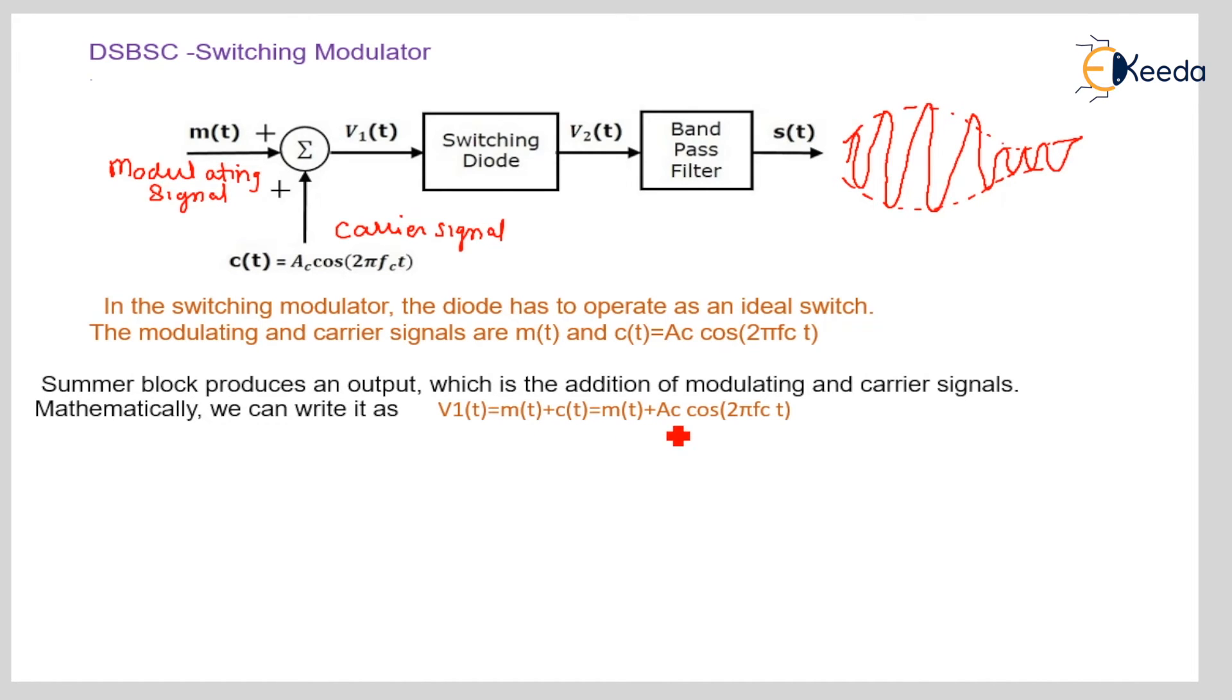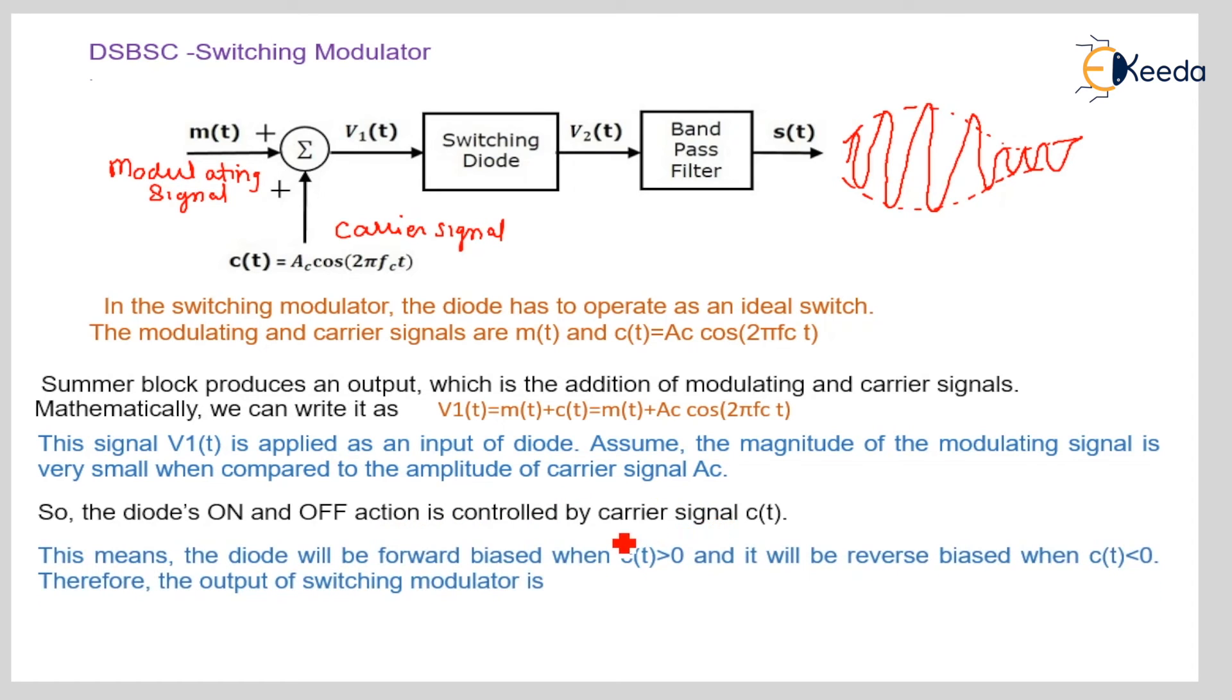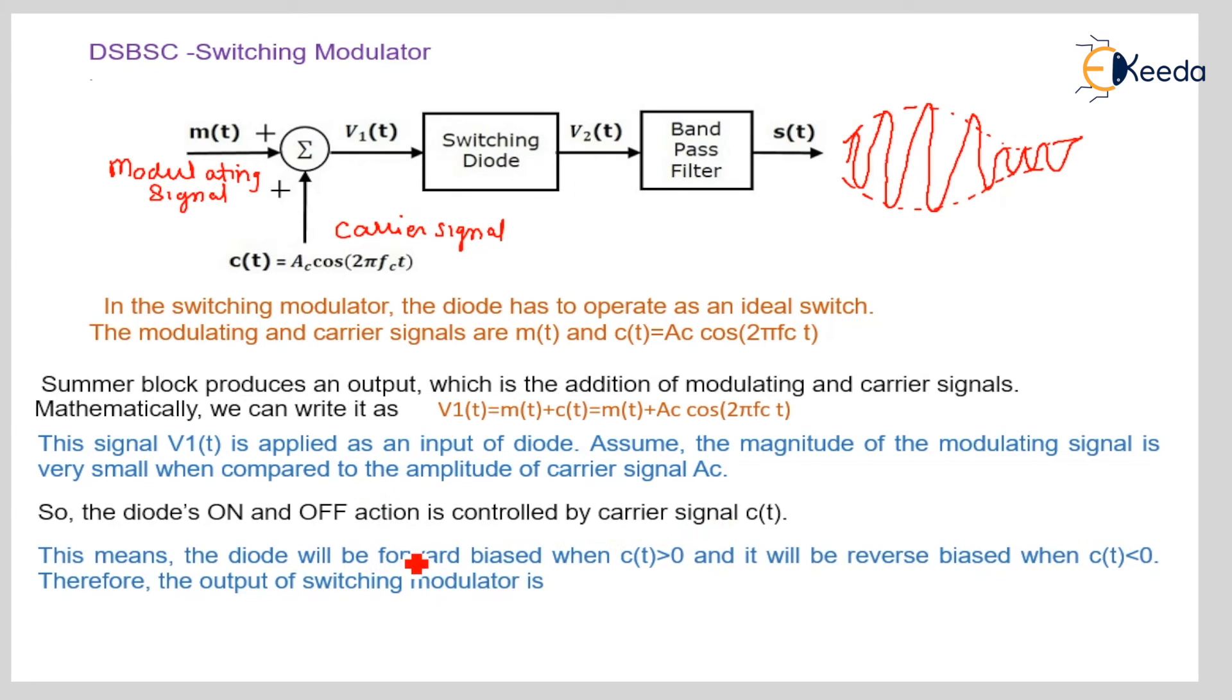V1 of T is applied as an input to the diode. Assume the magnitude of the modulating signal is very small and carrier signal is very large. So diode is on and off according to the carrier signal amplitude. The diode will be forward biased when C of T greater than 0, and will be reverse biased when C of T less than 0.